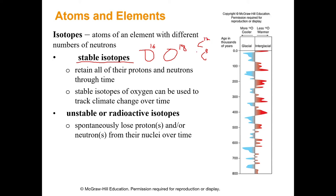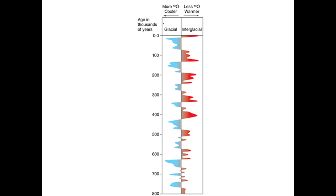Once atoms get too many neutrons they begin radioactive decay. We'll talk more about radioactive decay when we get into geologic age and dating rocks. Carbon-14 is radioactive and takes a definitive amount of time to decay to carbon-13 and carbon-12, which we use as a clock to determine how old something is. However, carbon-14 only works for about 40,000 to 60,000 years; we use larger elements for things that are millions or billions of years old.